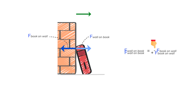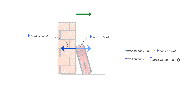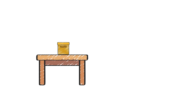In another example, a box is sitting on a table. The box is putting a certain force on the table acting in the downward direction — let's call this the force of box on the table. By Newton's third law, there should be an equivalent opposing force, which is the force the table exerts on the box in the reverse, upward direction — the force of table on the box.